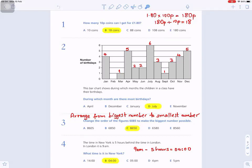Question number three: Change the order of the figures 6085 to make the biggest number possible. To get the biggest number, always arrange from the biggest number to the smallest number, so you'll get 8650 - biggest, next biggest, then five, zero.